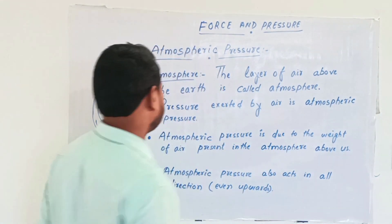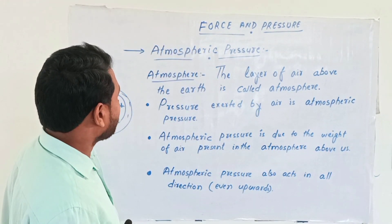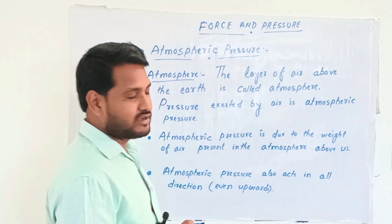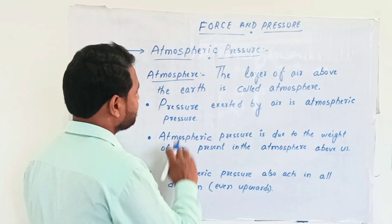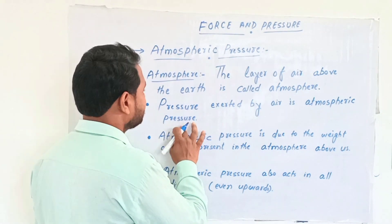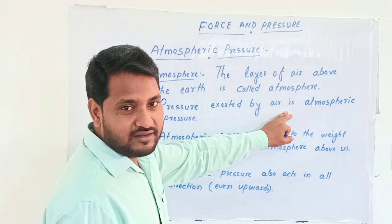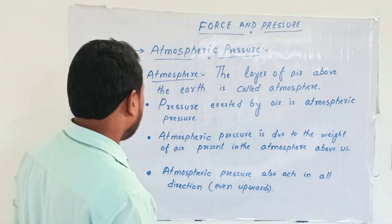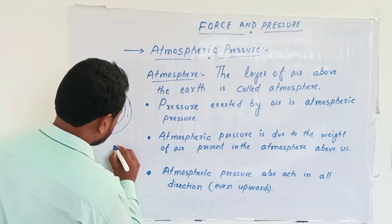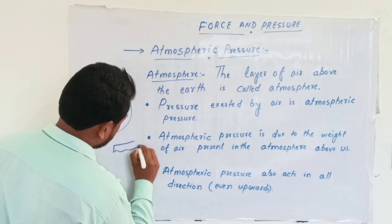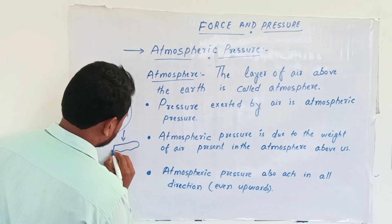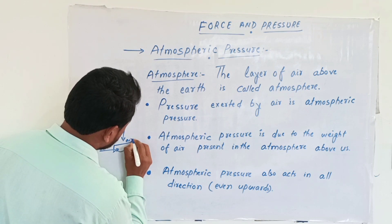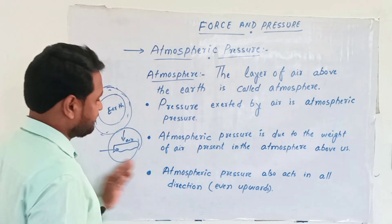Next question: what is atmospheric pressure? Pressure exerted by air is atmospheric pressure. Like this — this is the object, it is exerted by the pressure of air — it is called atmospheric pressure.